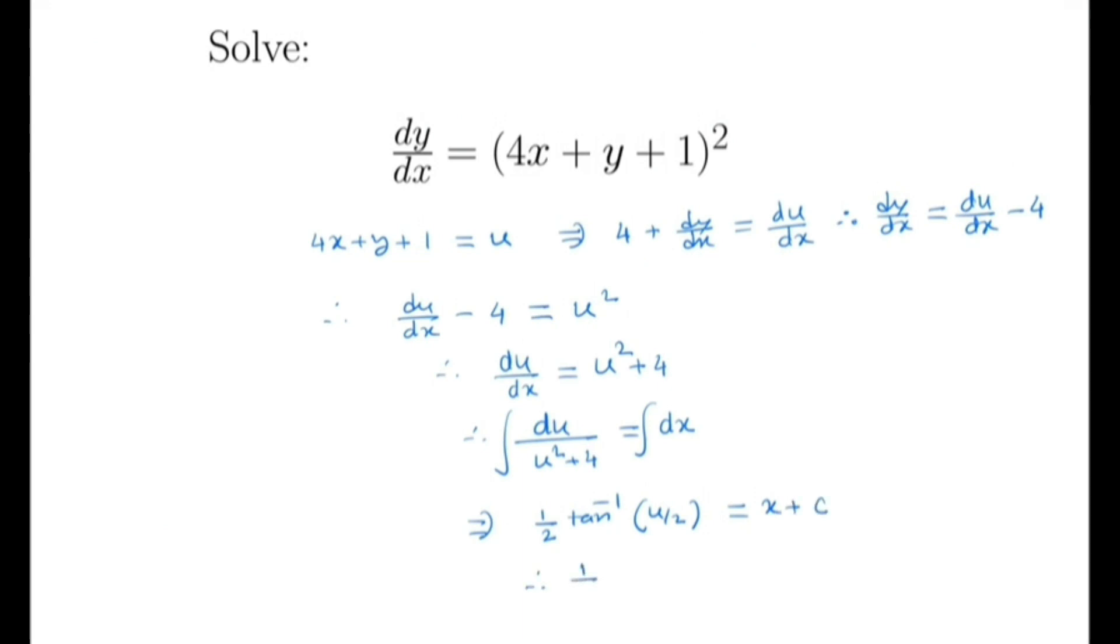And what is u? u is nothing but 4x + y + 1. So (1/2)tan⁻¹((4x + y + 1)/2) = x + C, which is the general solution.